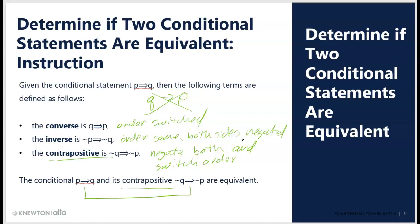So if I start with if A then B, an equivalent statement would be if not B then not A. If I start with if not C then D, the equivalent contrapositive would be if not D then C — I change the negation state of both variables and switch the order. If I did not change both negation states, or if I did not switch the order, the two statements are not equivalent. You cannot just change the order of an if-then and have an equivalent statement.